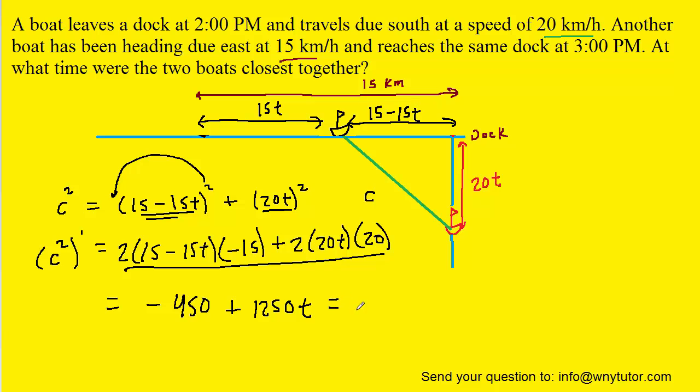After finding the derivative, what we do in optimization problems is we set the derivative equal to 0, and we solve for our variable. And when we do that, we get time is equal to 9 twenty-fifths of an hour.